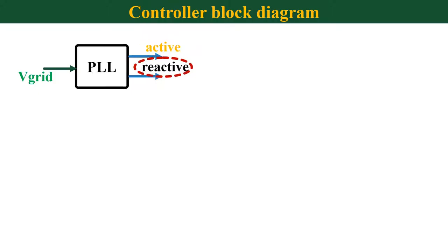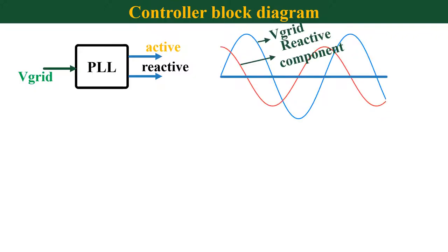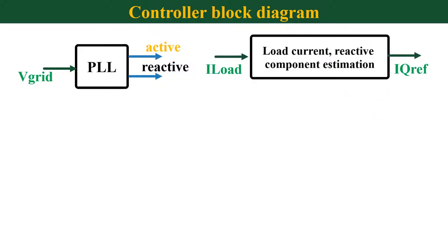Now I will explain the controller block diagram of a single phase active rectifier. We start with phase locked loop. Output of phase locked loop will give one active component and one reactive component. The active component is aligned in phase with the grid. Reactive component is aligned 90 degrees out of phase with the grid. The next step is to find the amount of reactive current present in the load. This current decides the amount of current the Statcom has to be generated. I will explain this in detail in the coming slide.